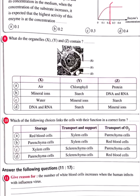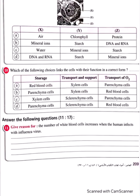Question number 10: Which choice correctly links cells with their functions — storage, transporting, support, and transporting oxygen? Red blood cells and xylem cells can't be paired together since they belong to plant and animal respectively. Option B — parenchyma cells for storage, xylem cells for transporting and support, and red blood cells for transporting oxygen — this is the best answer. We will choose B.